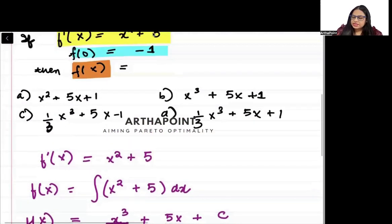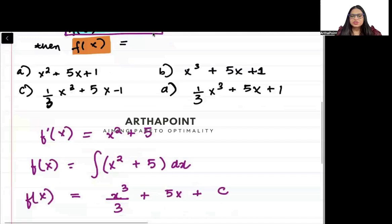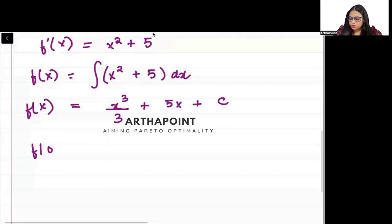Now the question is telling you that f(0) is -1. When you keep x to 0, you have -1. So let us plug 0 everywhere.